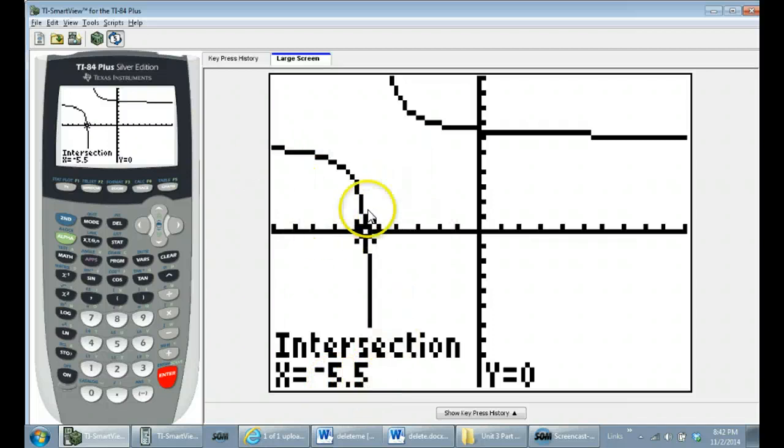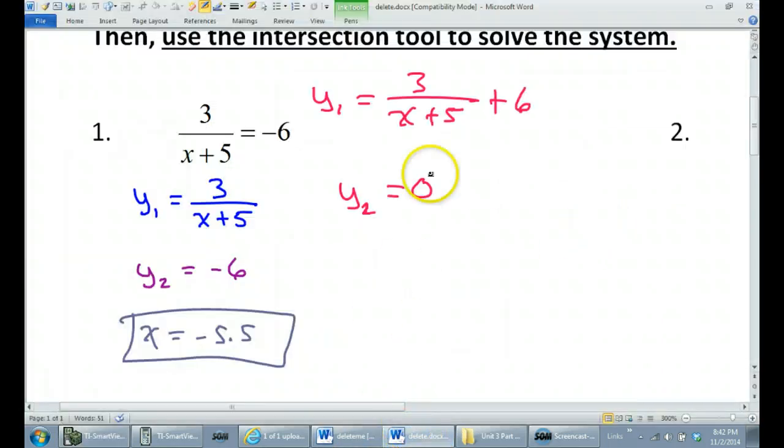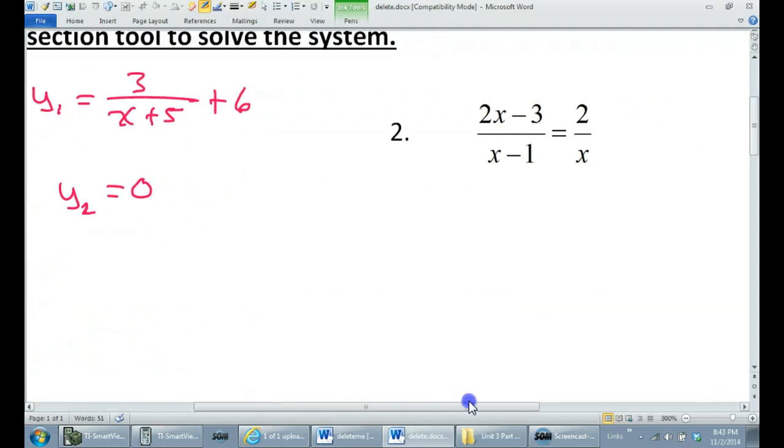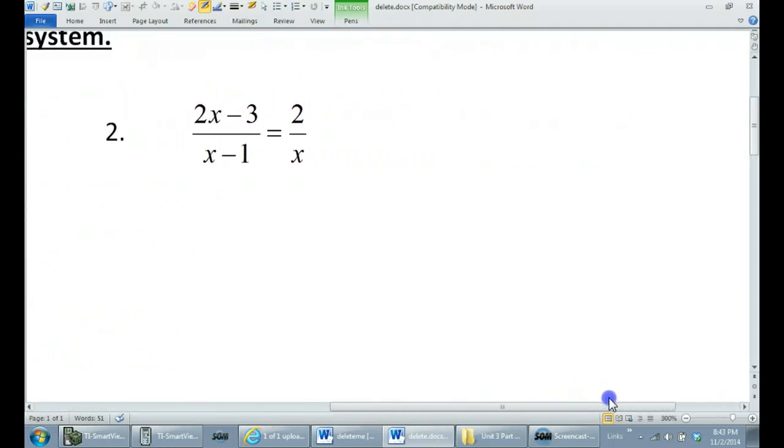The advantage of doing it this way is that the x-axis is always going to be what you're looking for, the intersection with the x-axis. So you'll never have to hunt around changing the window dramatically to find the x-intercept, because the calculator always starts off with the x-axis right in the middle of your screen. That's the advantage. The disadvantage is that you have to do this extra step of moving this over, which is pretty simple, but some kids can mess up a simple step. So you'll have to choose which way you want to do it.